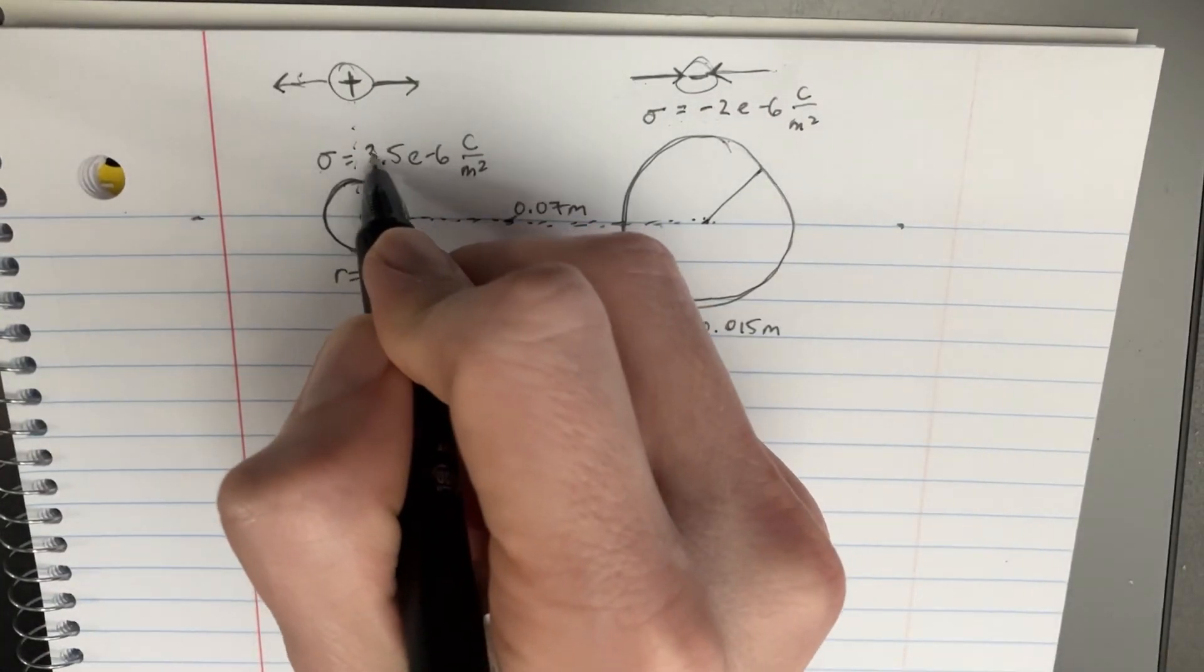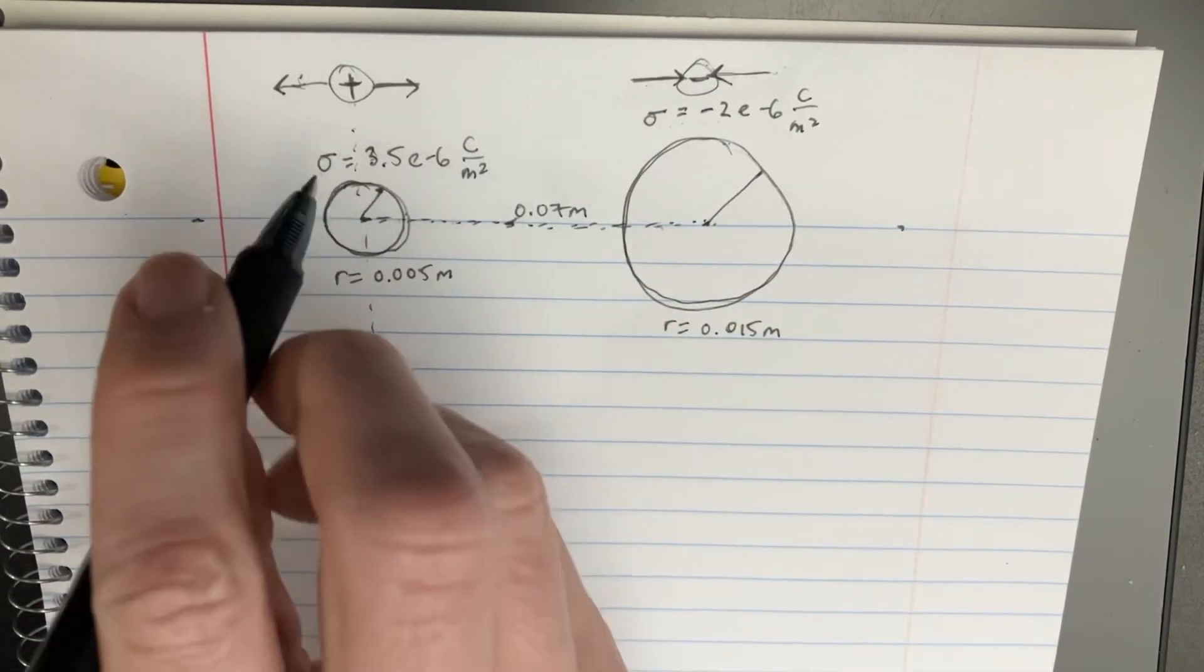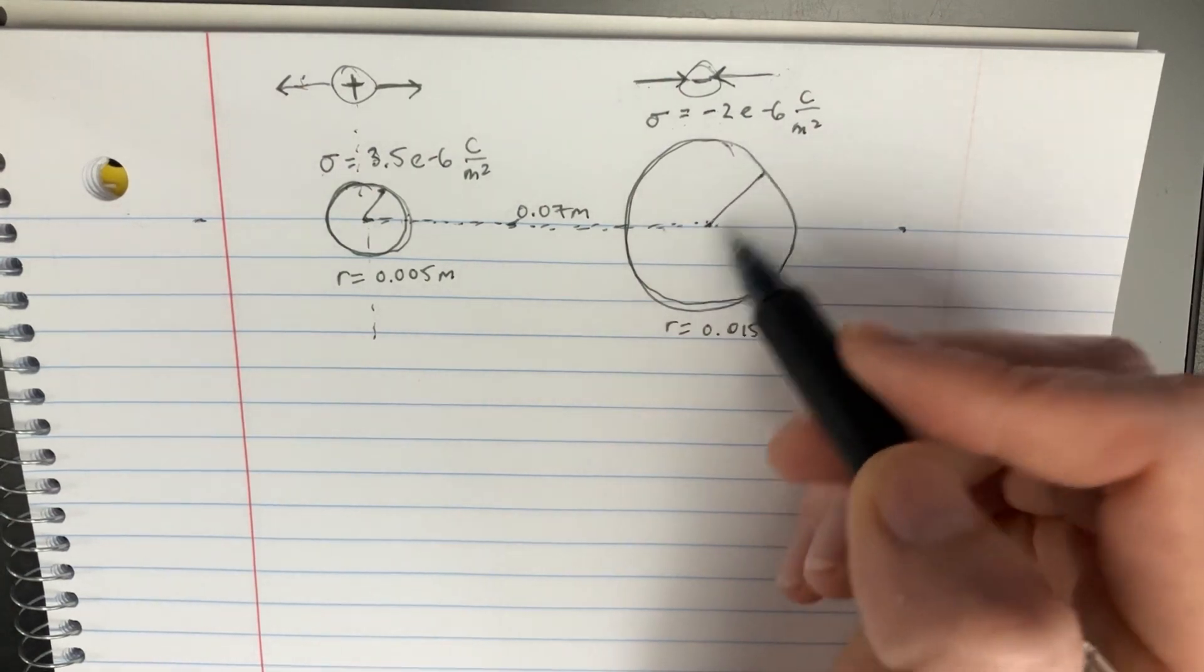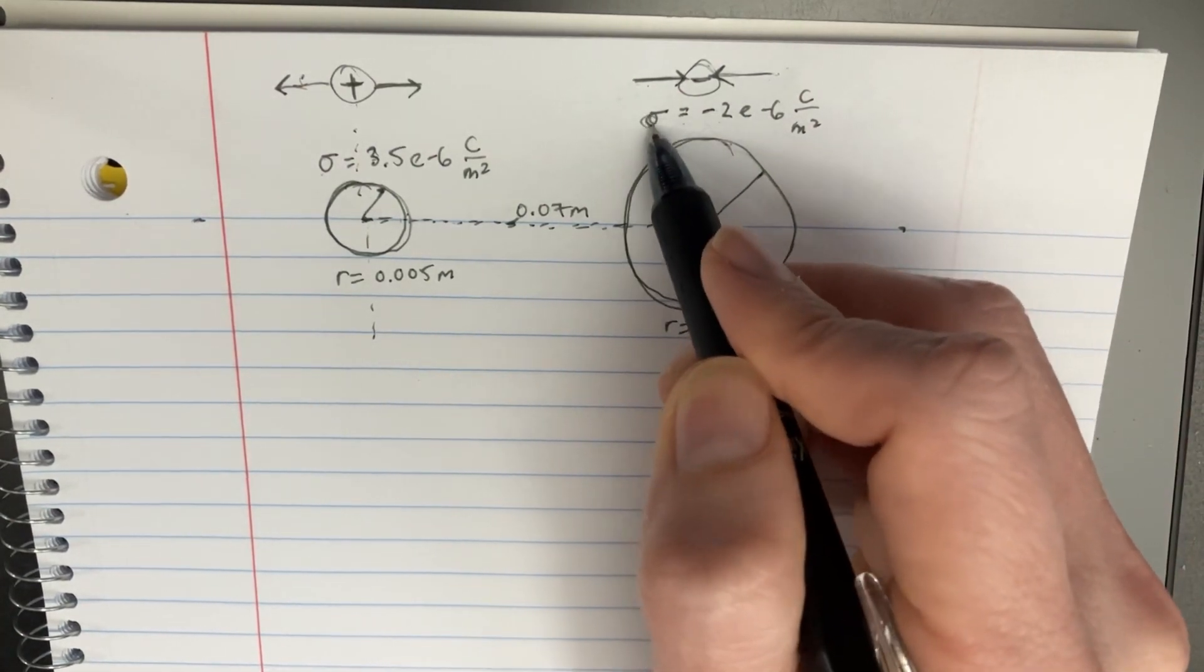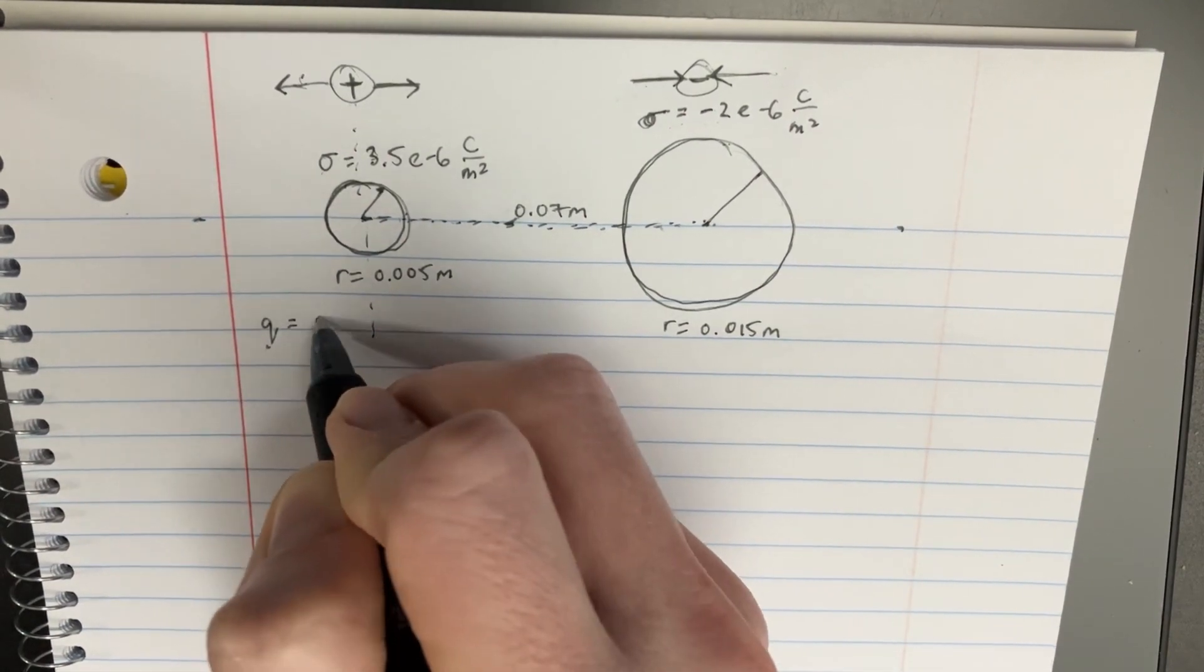And so we're trying to figure out which zone here or here or here is the electric field. Now, you might be thinking, okay, well, let's compare these numbers. This looks like a bigger charge, but we don't want to be comparing the densities. We want to be comparing the charges. So we actually want to be comparing q.